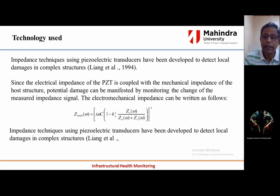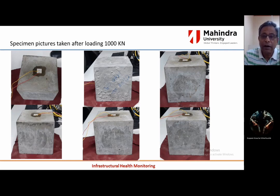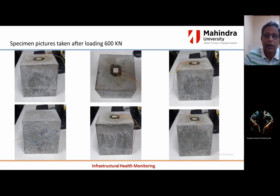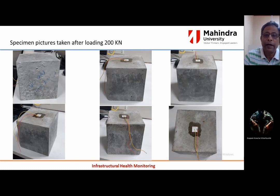Here are pictures of the specimen taken after loading at 1000 kN — no damages or cracks are visible on the surface. After loading at 800 kN also, there is no damage seen. At 600 kN also there is no damage, and at 400 kN also there is no damage. Obviously at 200 kN there will be no visible damage either. These pictures show no visible damage on the surface of the structure.